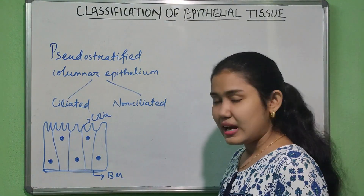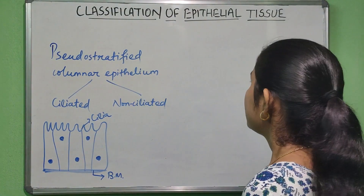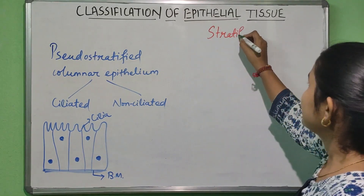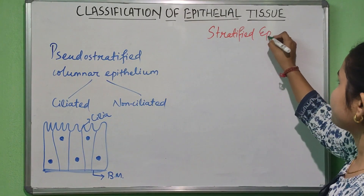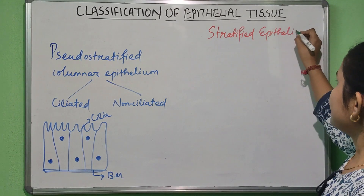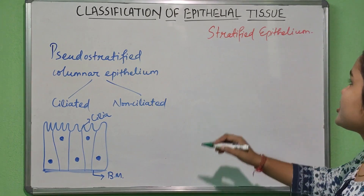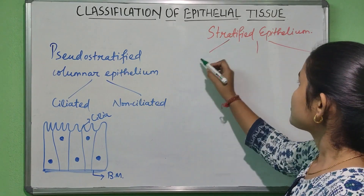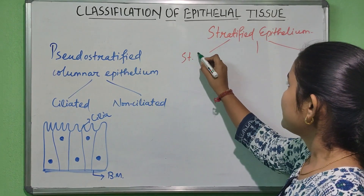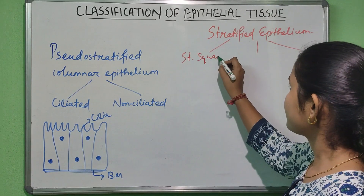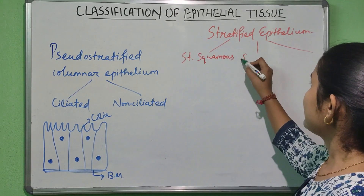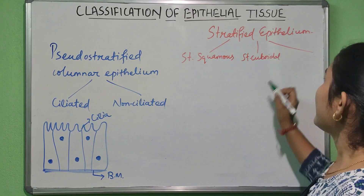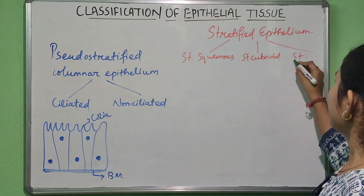Now, let's look at the classification of stratified epithelium. Considering the shape of the cell, it can be of three types: stratified squamous, stratified cuboidal, and stratified columnar.